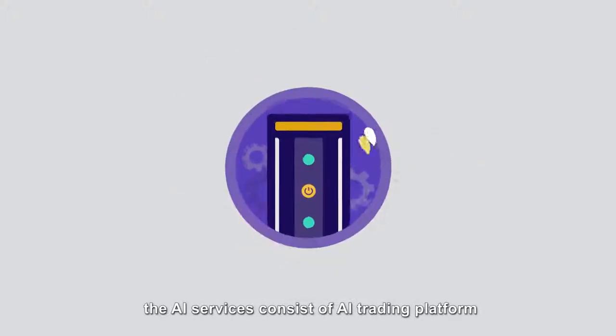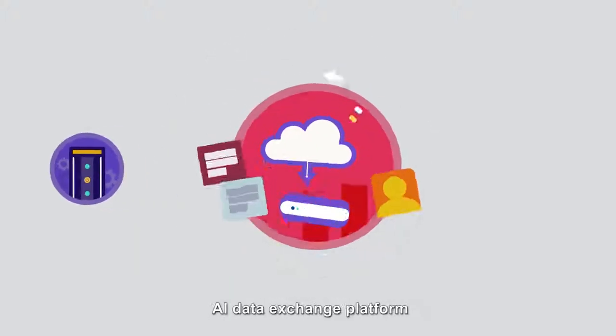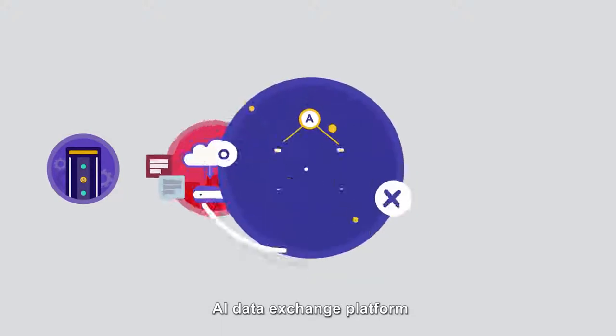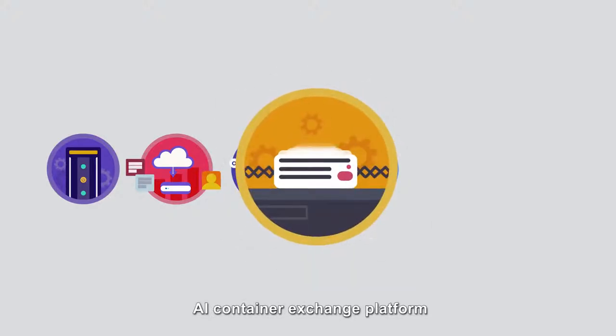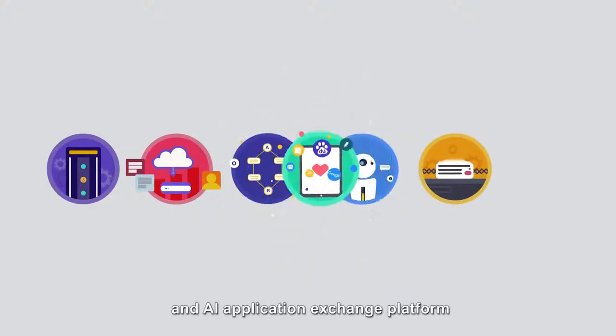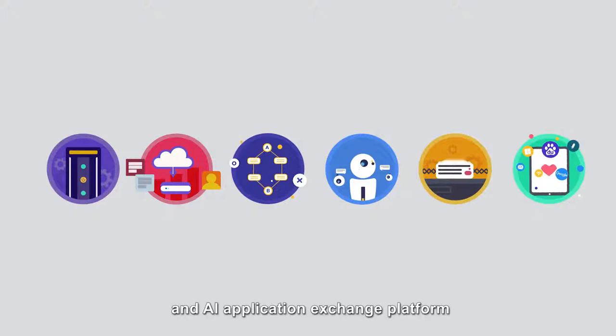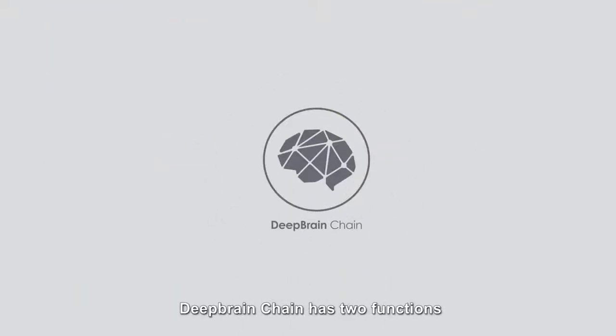The AI services consist of AI trading platform, AI data exchange platform, AI calculating trading platform, AI model exchange platform, AI container exchange platform, and AI application exchange platform. DeepBrain Chain has two functions.